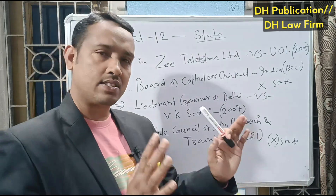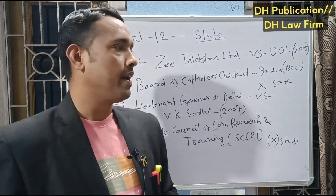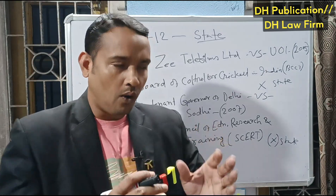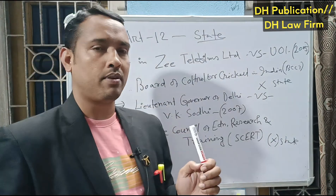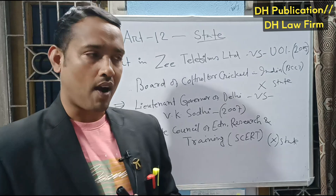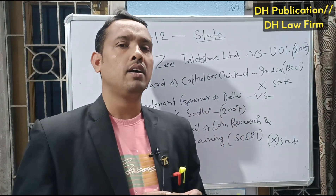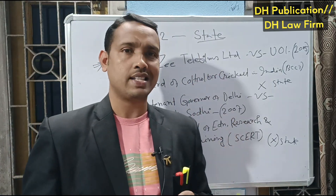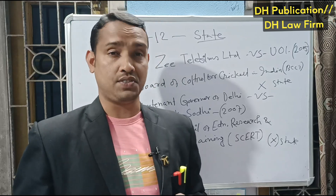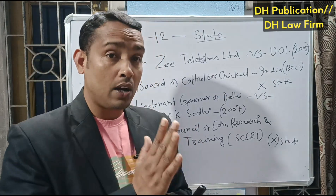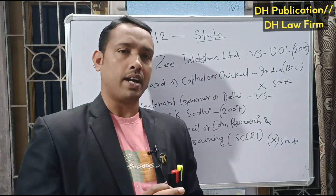So HCERT and BCCI are not 'state' under Article 12. If any organization — the government of India, parliament of India, or other included organizations — violates the provisions of Part 3 of the Indian Constitution, which are fundamental rights, then a writ petition can be filed for enforcing fundamental rights before the Supreme Court under Article 32, or before the High Court under Article 226. Article 12 itself is not a fundamental right, but Articles 13 to 35 are fundamental rights — Article 12 is definitional only. Thanks a lot.